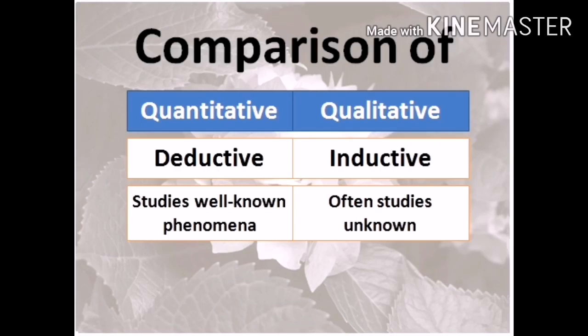Quantitative research often studies well-known phenomena — there is already a present phenomenon. While qualitative type of research studies the unknown. So in a quantitative approach, there is already present data and we check it again. We check it because data already exists, and then we discover what's happening with the phenomena. While in qualitative research, we check for the unknown — we don't know what's happening, but we investigate it.